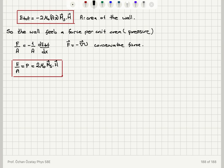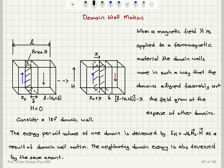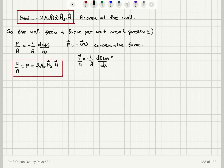The wall feels a force per unit area — a pressure — which is minus one over area times the derivative of the total energy with respect to x. Written as a vector, the force per area is minus one over area times dE_total/dx in the i-hat direction. Calling this the x-axis, the pressure felt by the wall is 2μ₀(Ms·H).